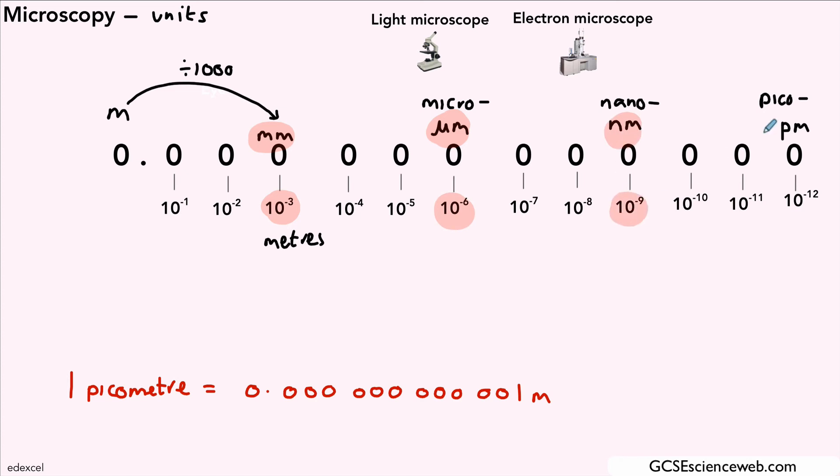And picometers is 10 to the minus 12. It's a much shorter way of writing the very tiny numbers that we deal with in microscopes. To give us an idea of what kind of objects we have at those various sizes...